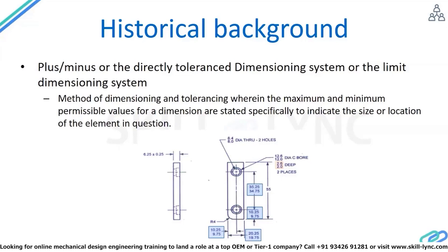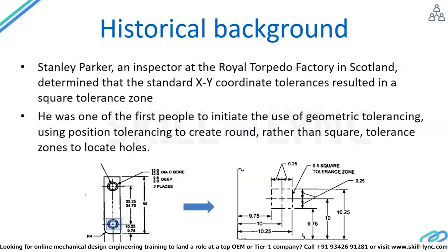Starting from this point, Stanley Parker, a quality inspector from the Royal Torpedo Factory in Scotland, found that there is a limitation of coordinate dimensioning. One of the main limitations is that when we use coordinate dimensioning, we end up with a square tolerance zone. To explain clearly: take the counter bore hole shown here. The dimension in the vertical axis is 10 plus or minus 0.25, and the dimension in the horizontal axis is also 10 with a tolerance of plus or minus 0.25.